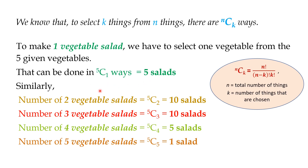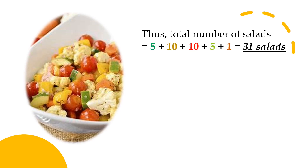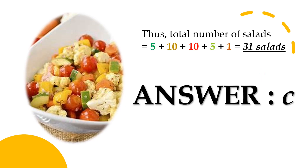Similarly, number of 2-vegetable salads equals 5C2, i.e. 10. Number of 3-vegetable salads equals 5C3, i.e. 10. Number of 4-vegetable salads equals 5C4, i.e. 5. Finally, number of 5-vegetable salads equals 5C5, i.e. 1 salad. Thus, total number of salads equals 5 plus 10 plus 10 plus 5 plus 1, i.e. 31 salads. The right answer to the question is option C.